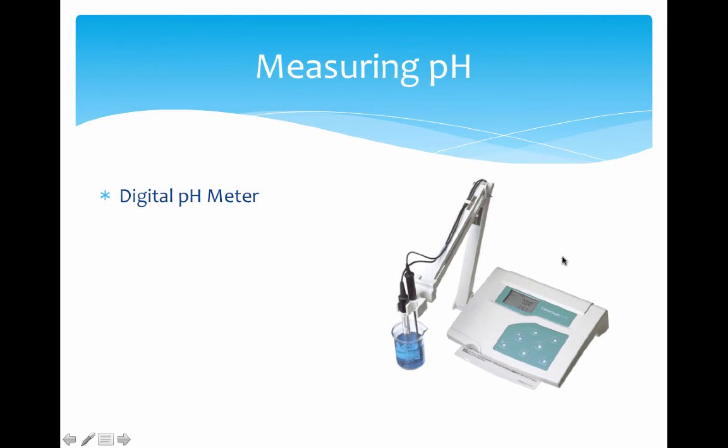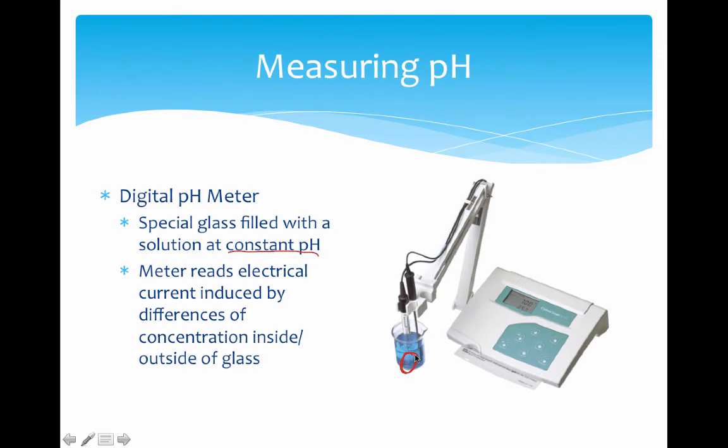If you're looking to get more technical, we can use a digital pH meter. It's got a special type of glass filled with a solution at constant pH. That glass is located at the end of this tiny probe. The device reads an electrical current induced by the differences in concentration from the solution outside versus inside the probe. That differential can be measured as an electrical value and correlated to a pH value on the measuring scale. This provides an actual measurable numeric value, whereas pH paper just gives a broad idea. Many more significant digits available, a much more high quality instrument.